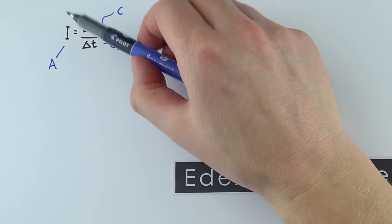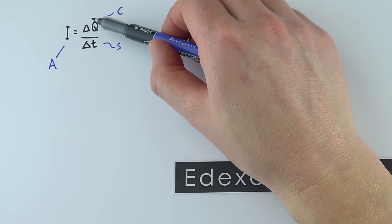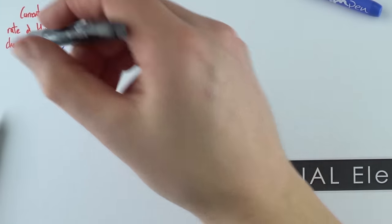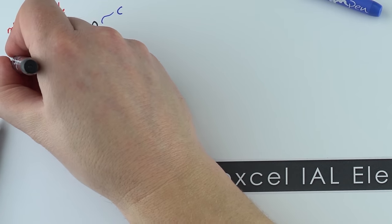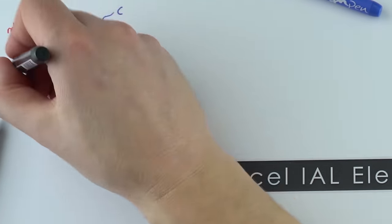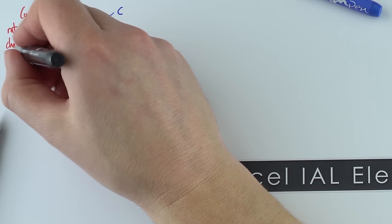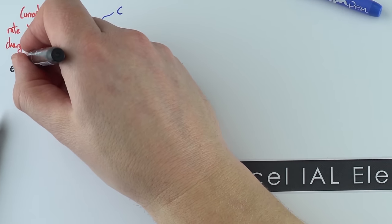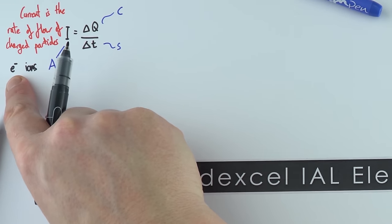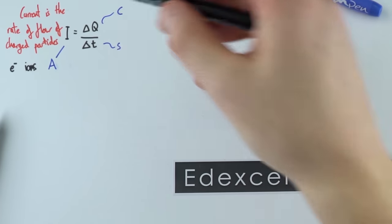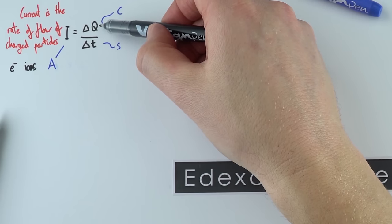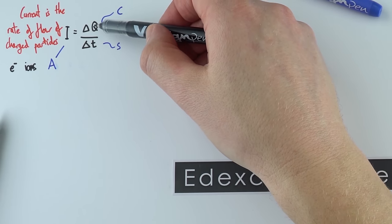Electric current is the rate of flow of charged particles. These charged particles most of the time are electrons — small negatively charged particles that go around the outside of an atom — but we could also have the flow of things with a positive or negative charge, perhaps some ions. In electric circuits we're just going to consider electrons at the moment. I is used to represent the current because it's like the intensity of current, and Q represents the charge because it's like the quantity of charge.